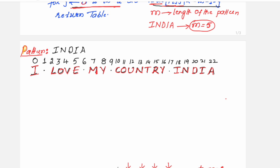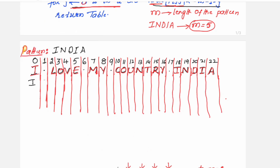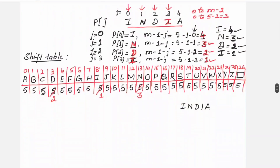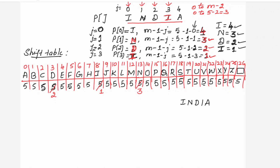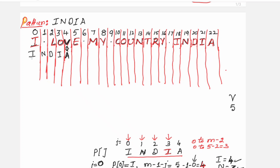Now we start matching the pattern. The algorithm tries to first match the last character of the pattern, which is A. Placing the pattern at position 0, the last character aligns with V in the text — no match. The letter at that position is V, and V has value 5 in the shift table, so the pattern is shifted by 5 positions.